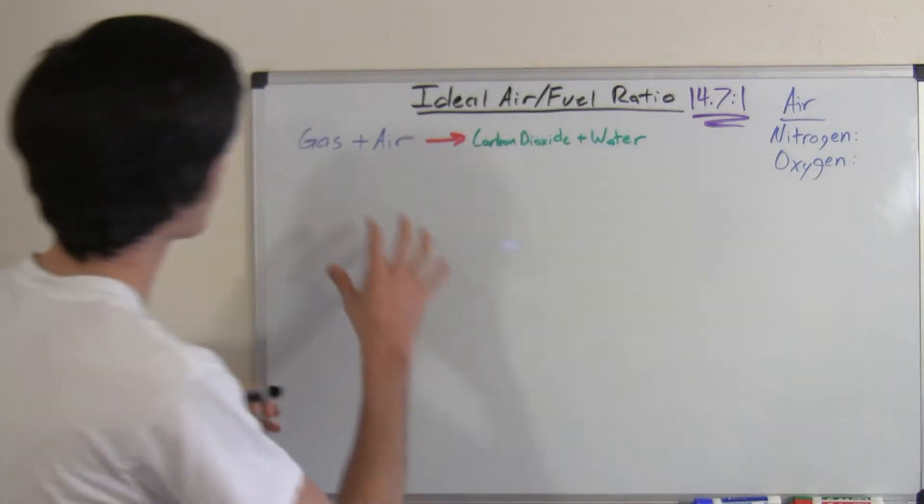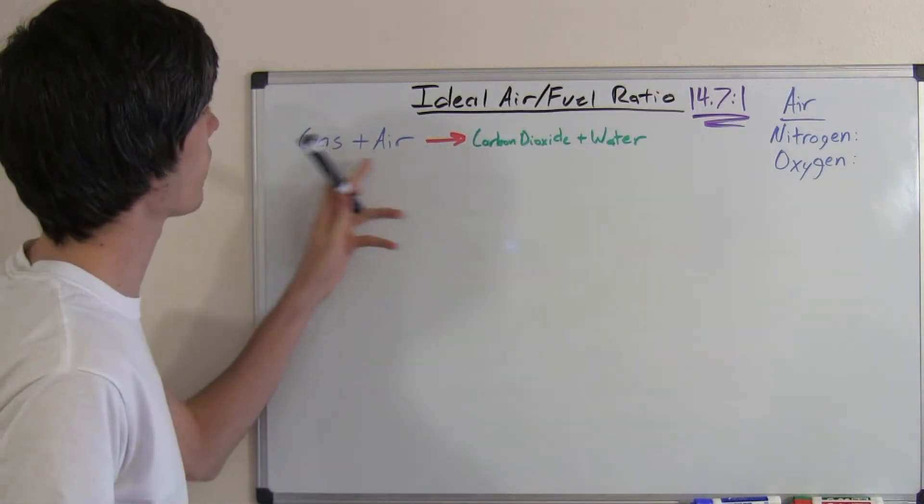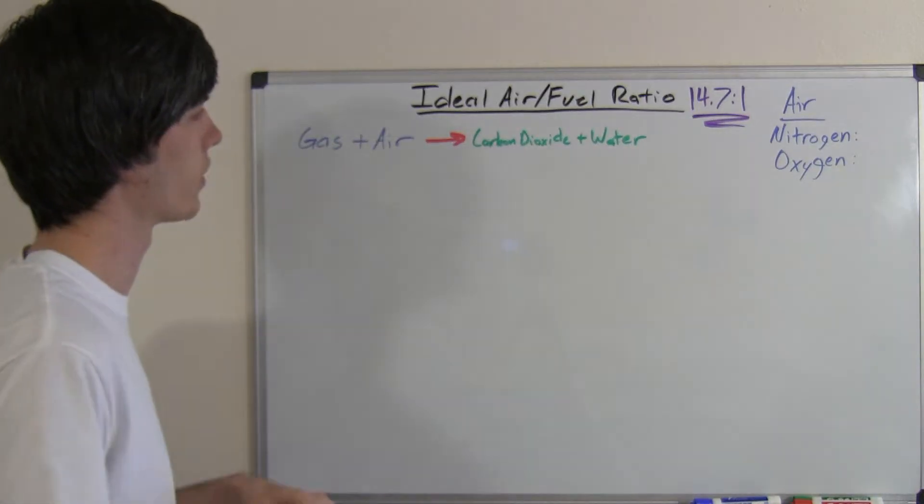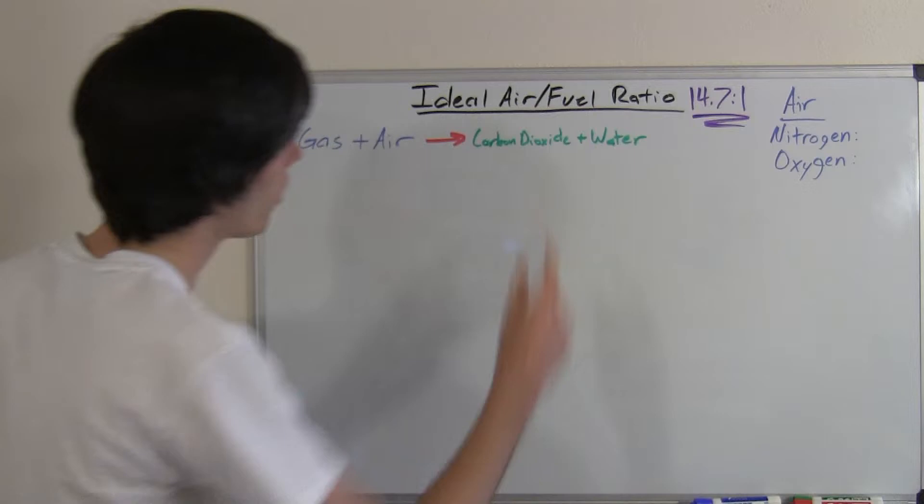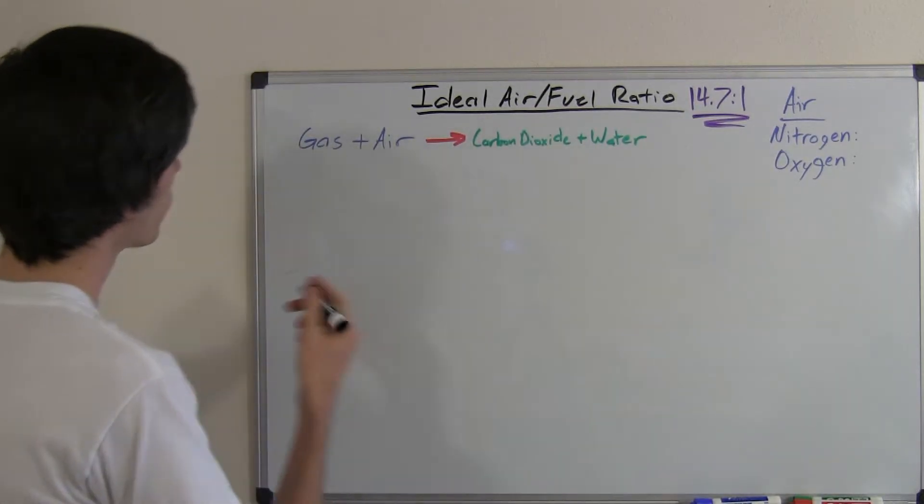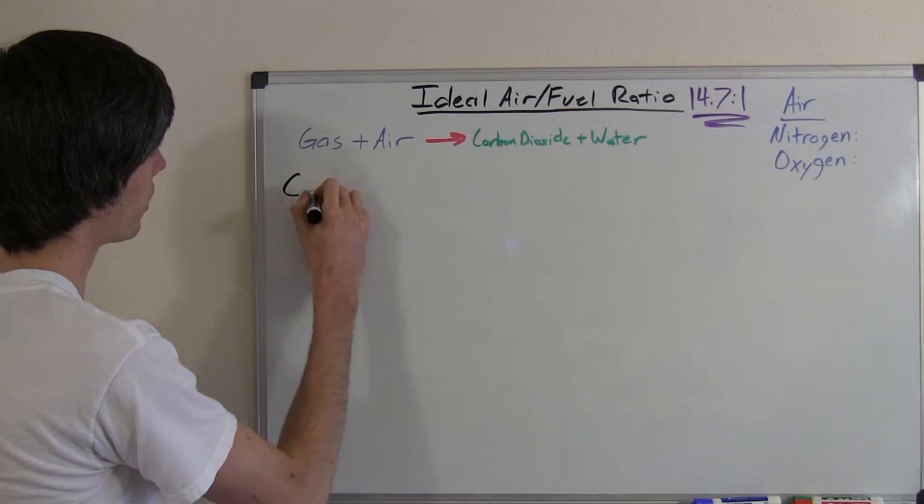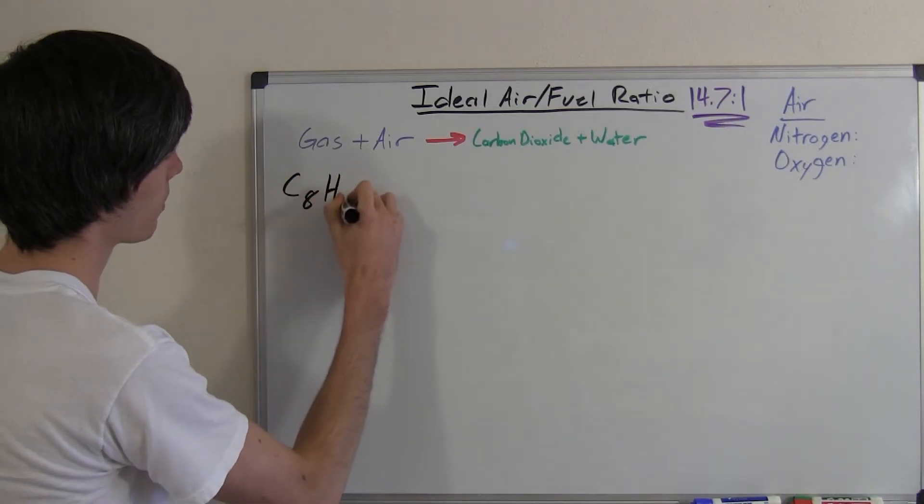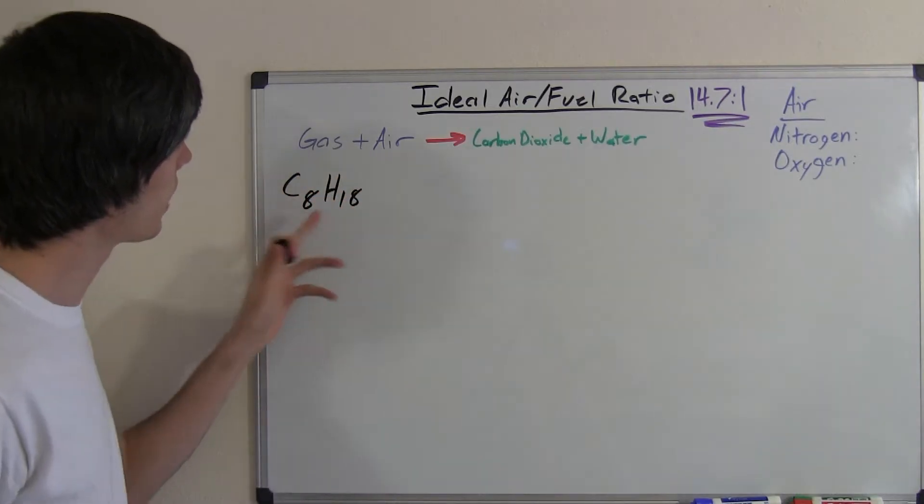So what you've got happening in combustion is you've got gas and air going into the cylinder and then coming out of your exhaust you're going to have carbon dioxide and water. So gas will be represented here by octane which the chemical formula is C8H18.